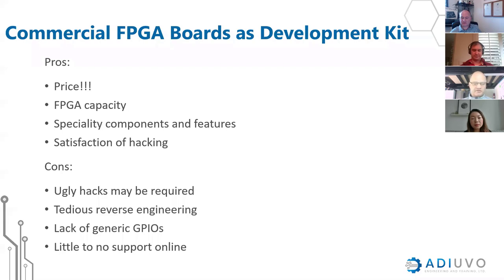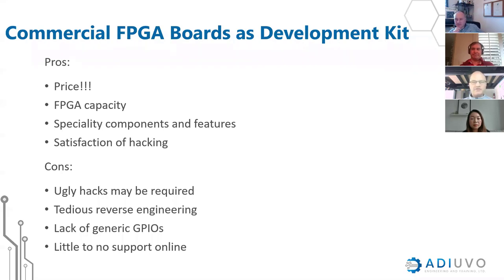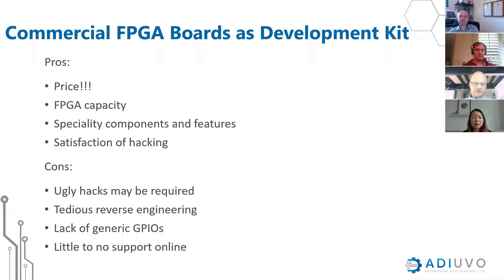The FPGA capacity of these products is often much higher than what you find in commercial or hobby development kits. The best example is the Panologic G2, which has 150,000 logic elements in a Spartan-6 LX150. I bought 25 of those for 75 dollars on eBay. After I published about it the price rose to about 20 dollars each, but that's still incredibly low for a huge-capacity FPGA. Another advantage is specialty features — if you're lucky and can reuse these boards for an application closely related to what was originally intended, you have everything right there. And there's the satisfaction of hacking.